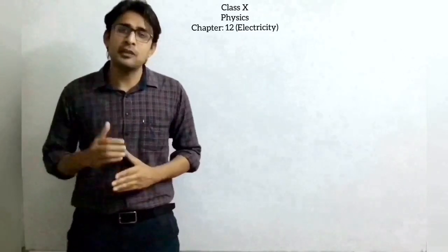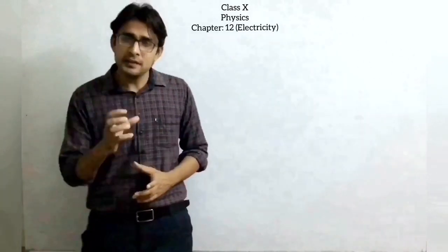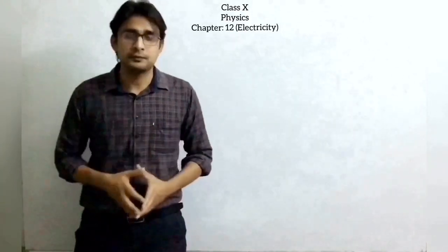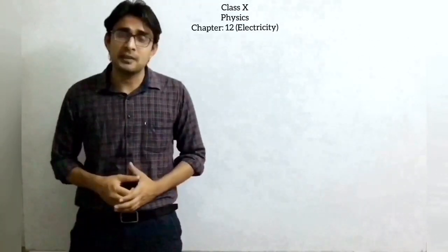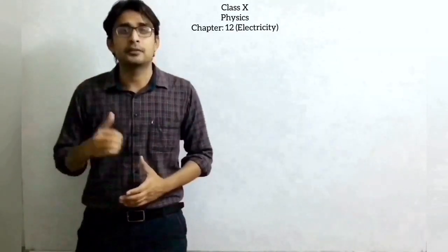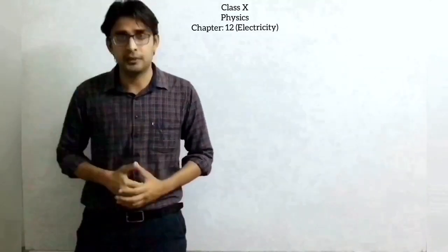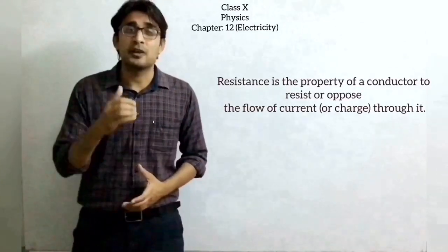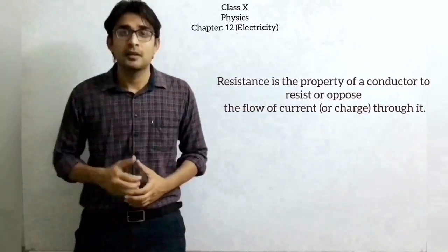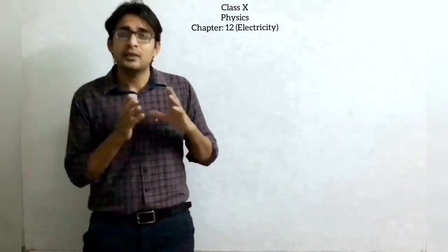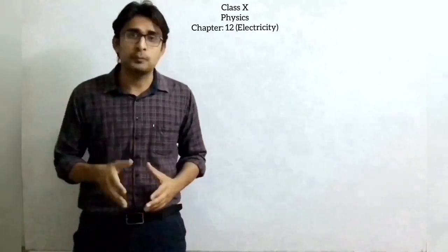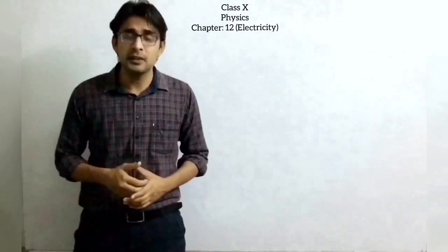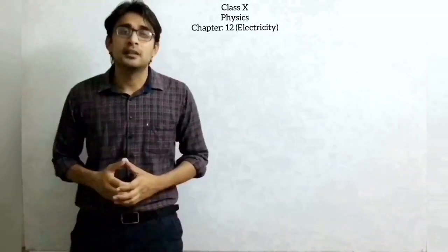But what is the actual concept behind resistance? Resistance comes from the word 'resist,' which means to oppose. The actual concept of resistance is that it opposes the flow of current through the conductor. So we can define resistance as the property of a conductor which opposes the flow of current through it. There are two ways to define resistance: one from Ohm's law as the ratio of potential difference to current, and the other as the opposition — the property by which a conductor opposes the flow of current.